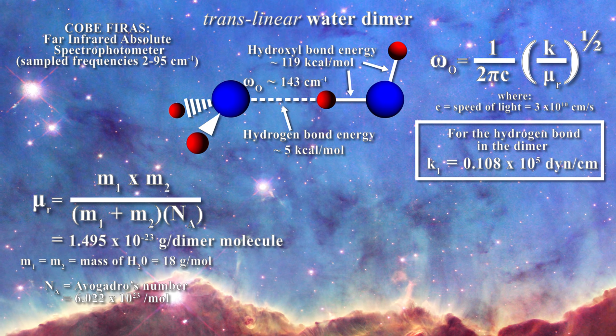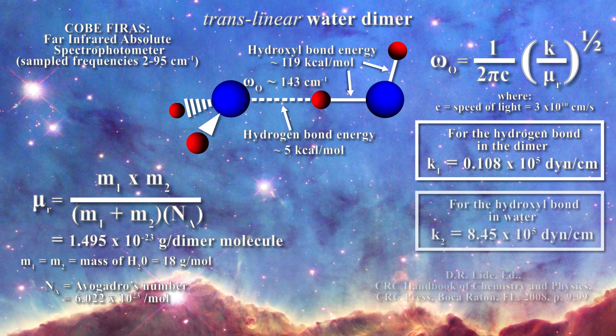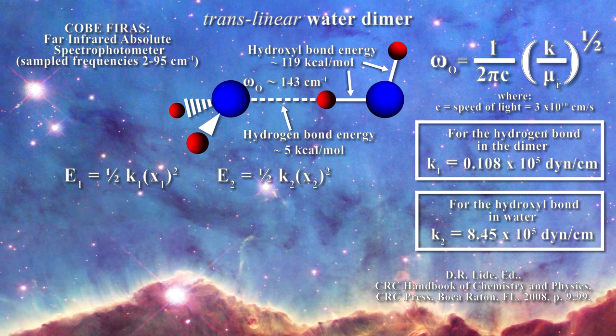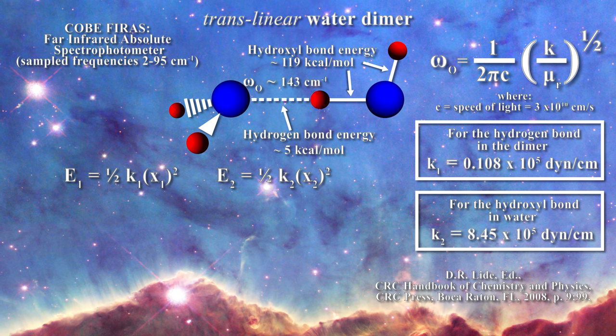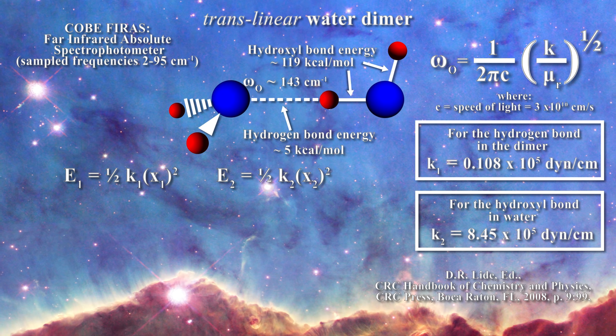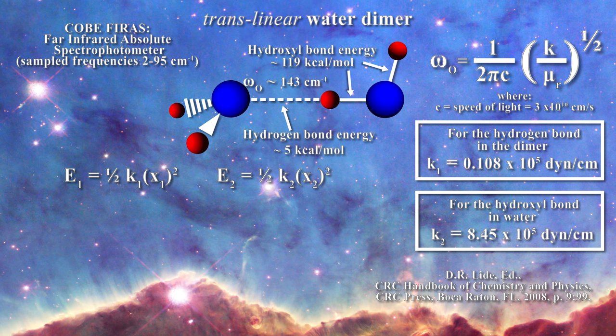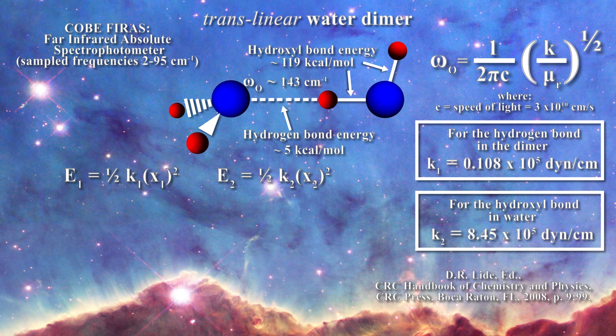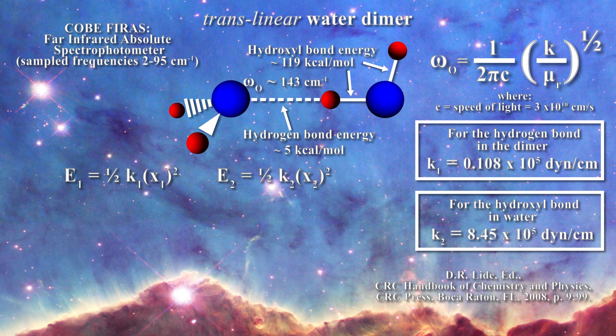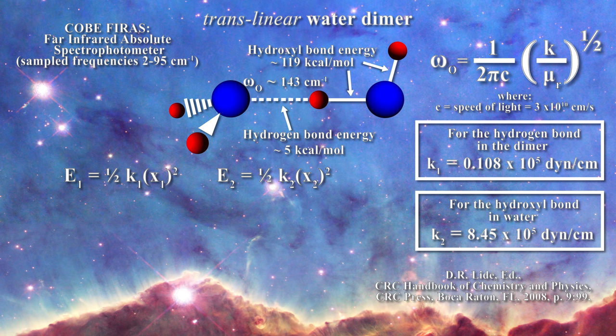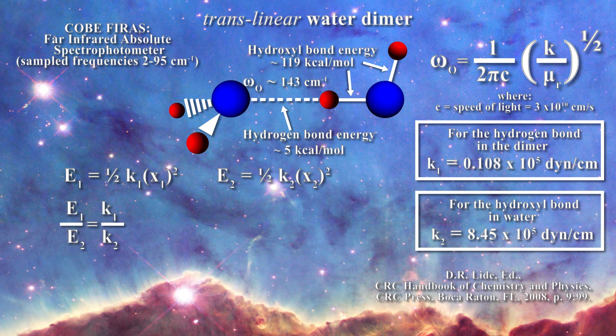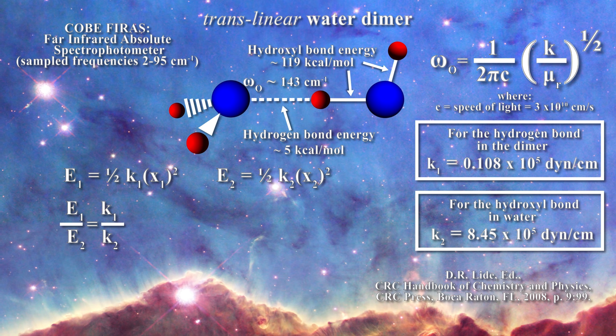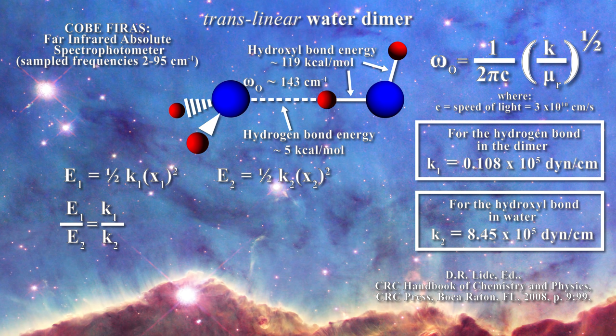The force constant for the hydroxyl bond can easily be obtained from the literature. It corresponds to 8.45 times 10 to the fifth dynes per centimeter. Now we can write these expressions for the energy contained within both the hydrogen bond and the hydroxyl bonds where k1 corresponds to the force constant that we have just calculated for the hydrogen bond and k2 was obtained from the literature for the hydroxyl bond. Because the hydrogen atom which forms the trans-linear bond is shared by both the hydrogen bond and the hydroxyl bond, the distance squared actually is common to both equations since x1 is equal to minus x2. Thus since the distances are the same, we can immediately get that E1 over E2 is equal to the ratio of the force constants as the square of the displacements are equal and cancel out. Consequently, in the dimer one expects the hydroxyl bond to be emitting at an energy which is about 80 times greater than that for the hydrogen bond in the dimer.